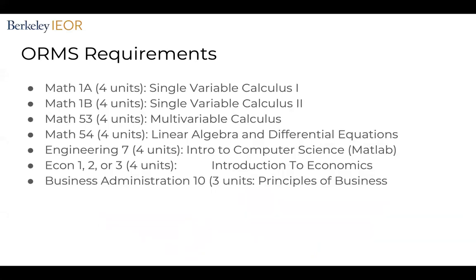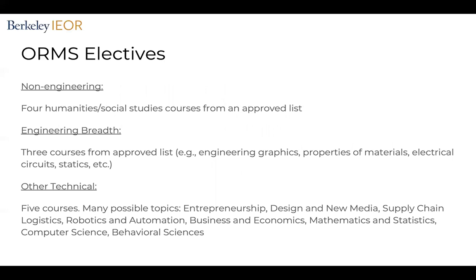We also offer a pretty popular ORMS major — Operations Research and Management Science — within the Letters and Science college. For this major, you take Math 1A, 1B, 53, 54, Engineering 7, Econ 123, and BA 10. For the ORMS major, you also take some electives, including non-engineering electives for Humanities and Social Studies courses, three Engineering breadth courses, and five technical elective courses. Those technical electives can be related to Supply Chain, Entrepreneurship, Design, Business and Economics, Mathematics, Computer Science, and Behavioral Sciences.